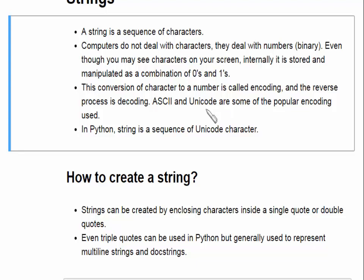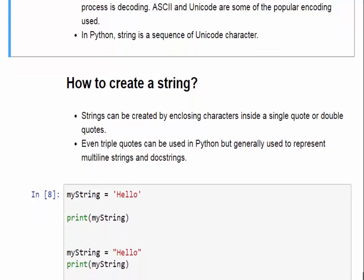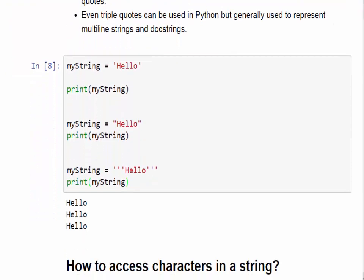After encoding, that conversion is made into ASCII or Unicode form. In Python, a string is a sequence of Unicode characters. Before reading any data structure, we should know how to create that structure.